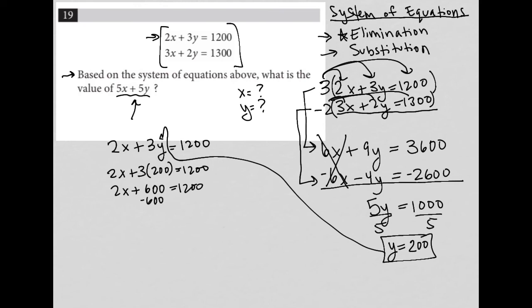I can then subtract 600 from both sides, leaving me with 2x equals 600. Then divide both sides by 2 to get x equals 300.